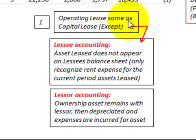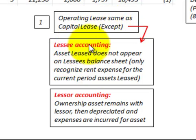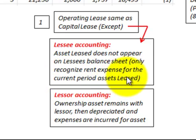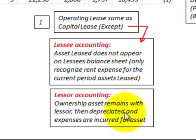Here we're going to be looking at an operating lease. An operating lease is the same as a capital lease except with these exceptions: from the lessee's accounting perspective, the leased asset does not appear on the lessee's balance sheet. They only recognize the rent expense for the current period of the asset leased. From the lessor's accounting perspective, the ownership of the asset remains with the lessor, and then it's depreciated and expenses are incurred for the asset by the lessor.